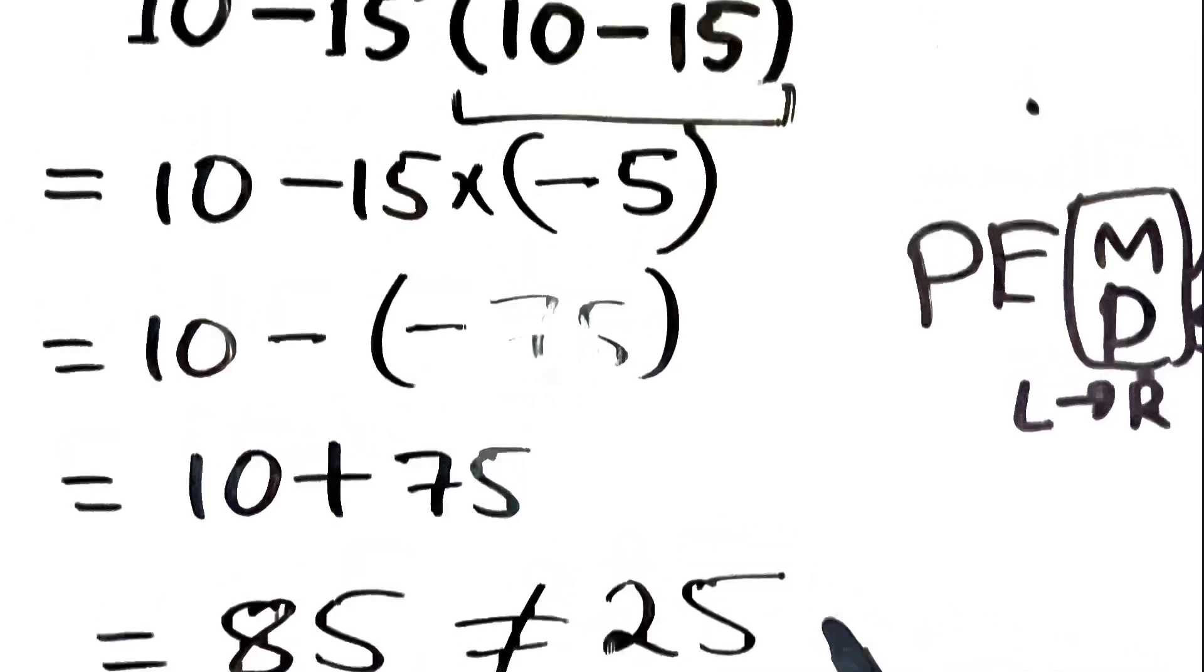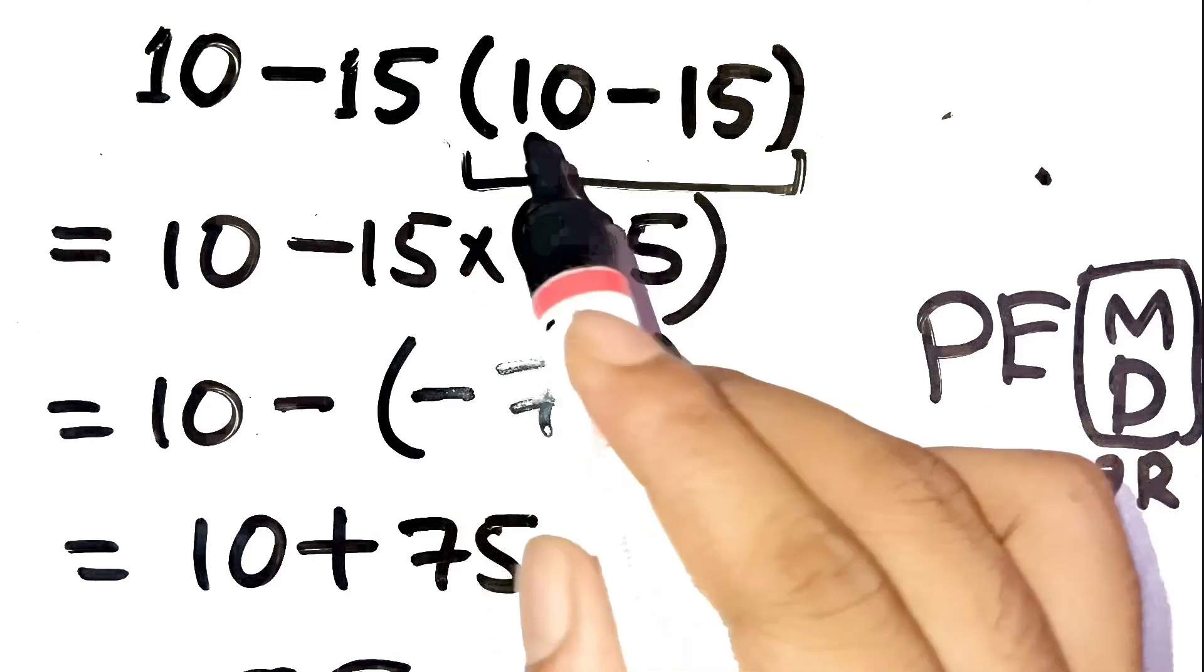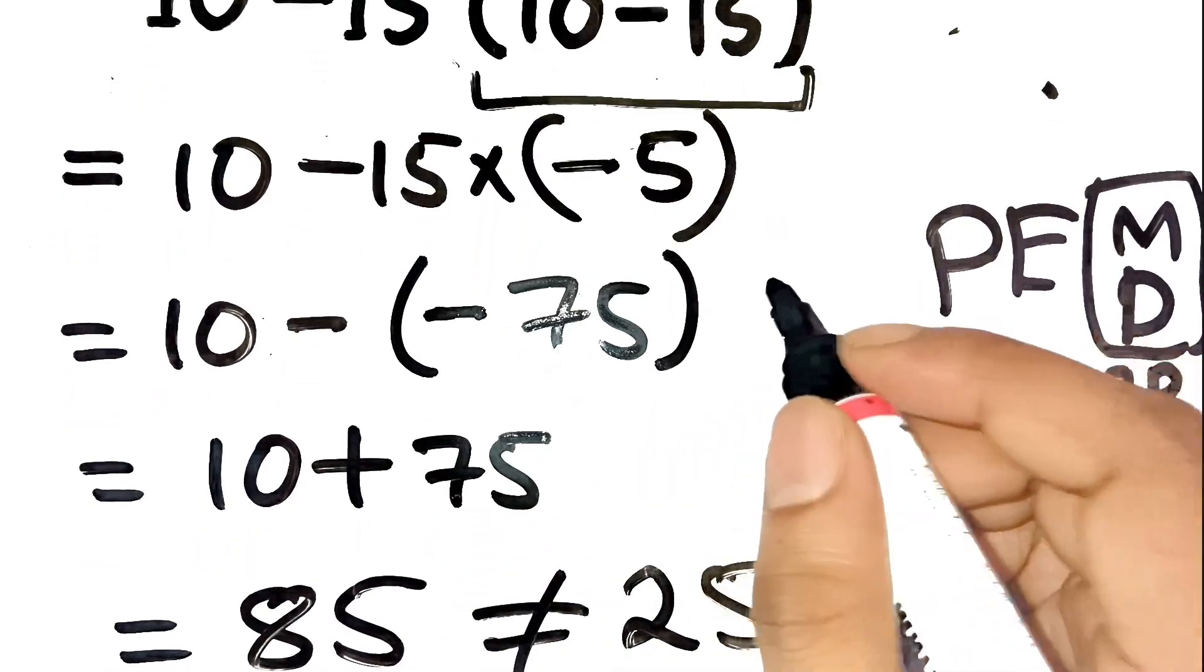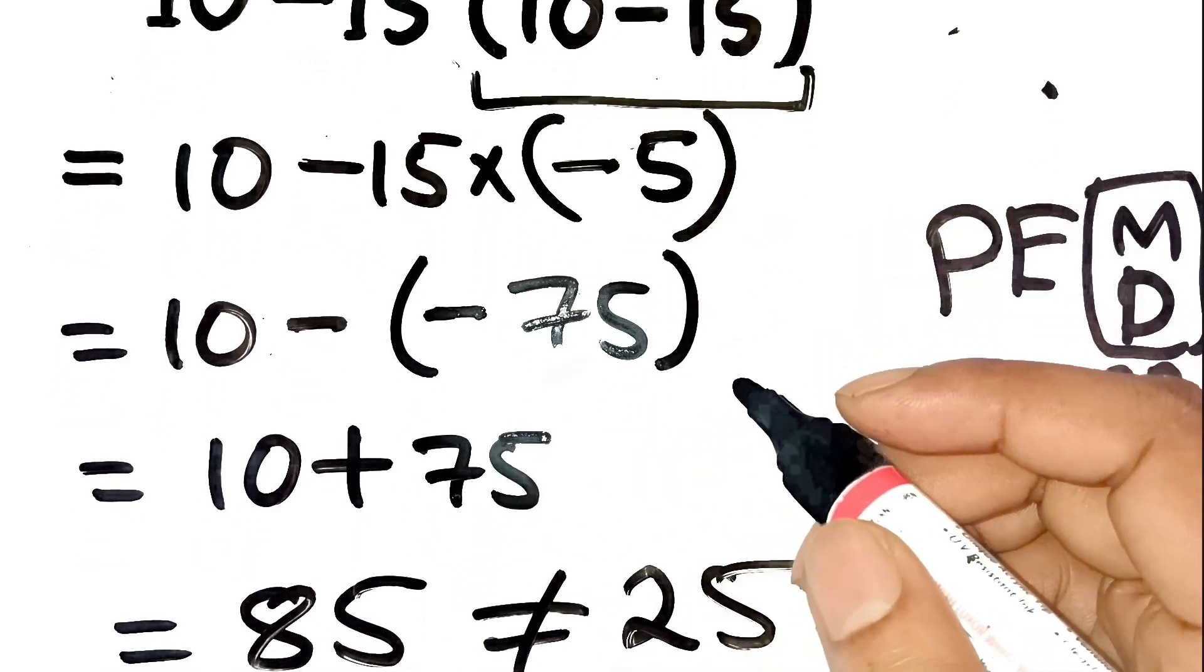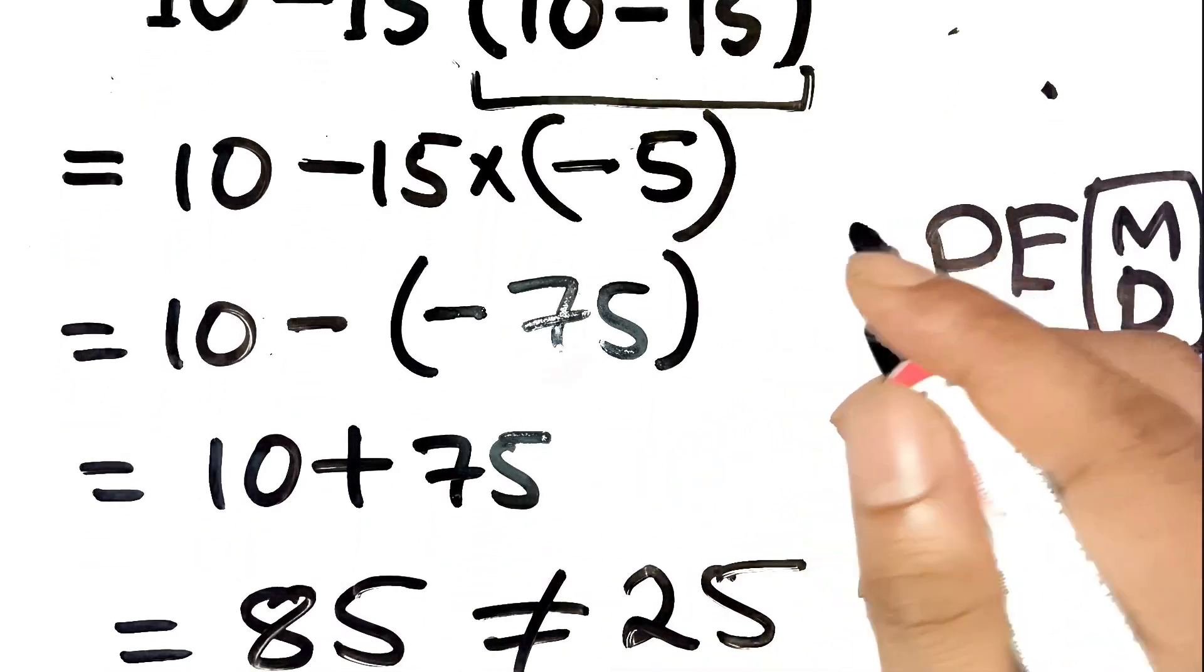See, that multiplication before subtraction rule completely changes the result. If you have any valid arguments or want to show a different method, write it down in the comments. Thanks for watching.